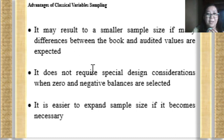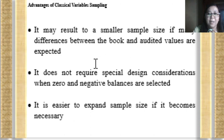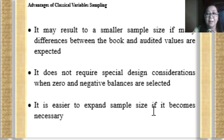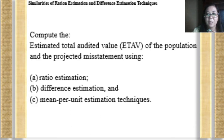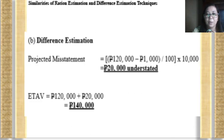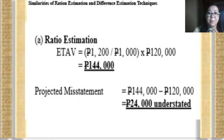Advantages of classical variable sampling include: it may result in a smaller sample size when many differences between book and audited values are expected; it does not require special design considerations when zero and negative balances are selected; and it is easier to expand the sample size if necessary. The auditor should ensure the appropriate method is selected for the items being evaluated.